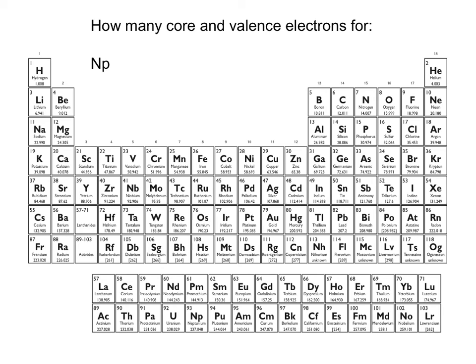For an inner transition metal example, neptunium: one, two — when counting the f's, this periodic table has 15 columns in the f block, and actinium is here — so one, two, three, four, five, six, seven. Neptunium has seven valence electrons, and 93 minus seven gives it 86 core electrons.